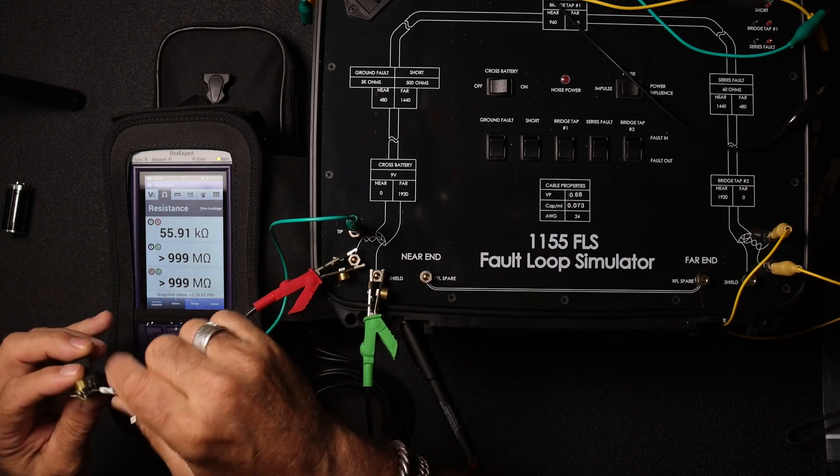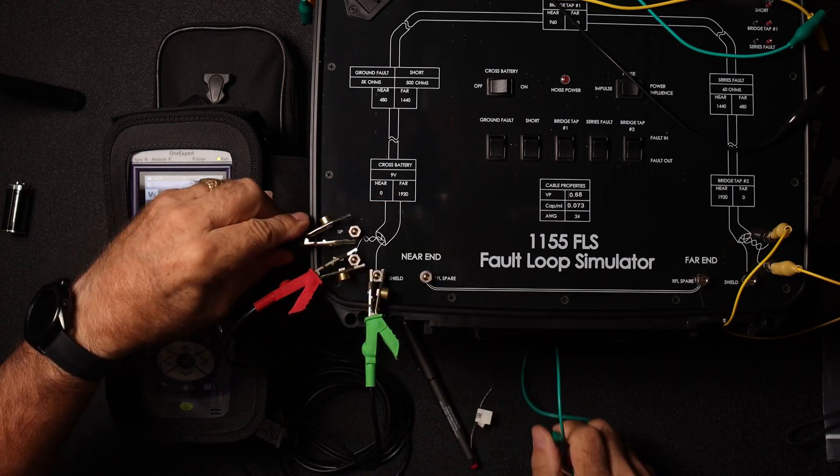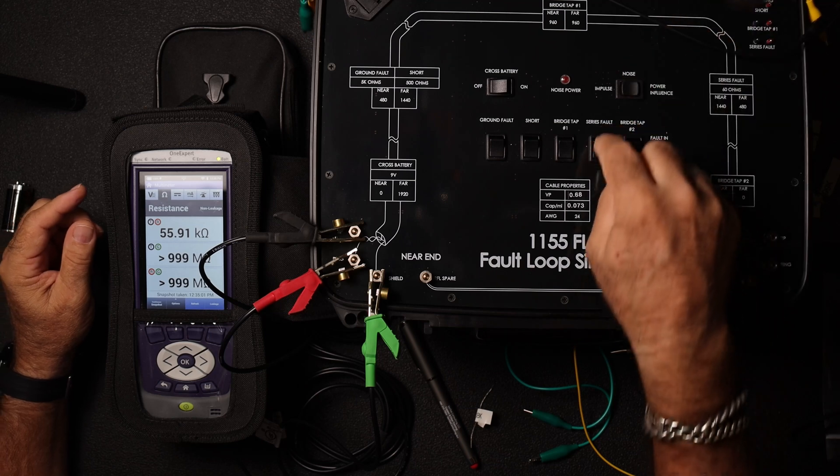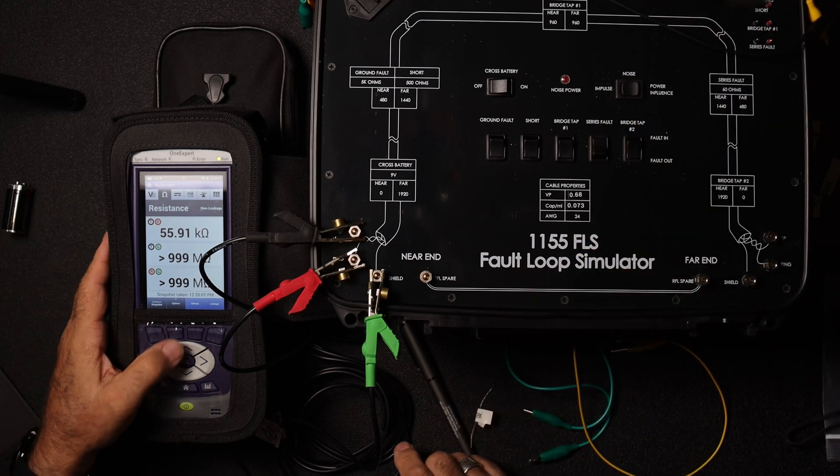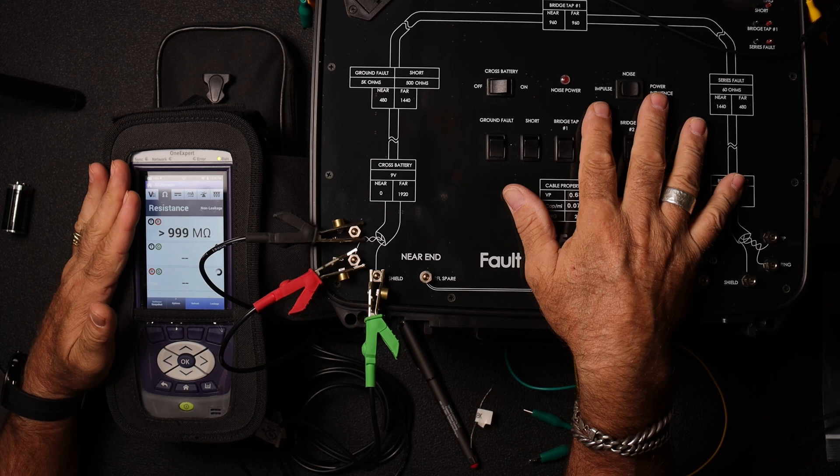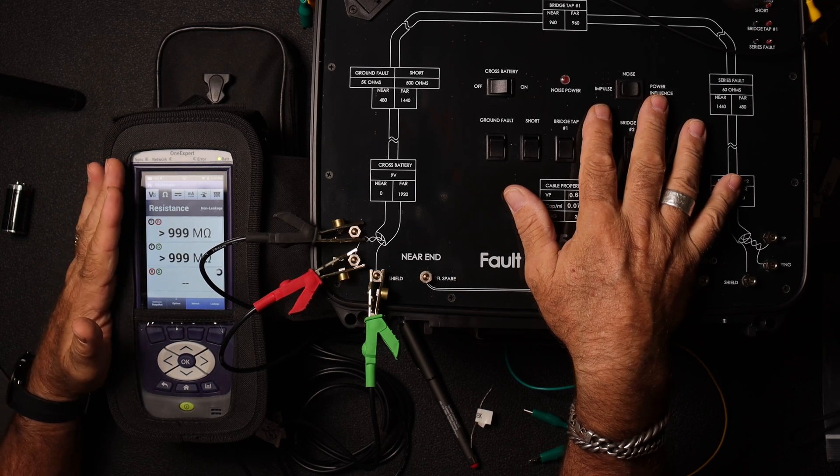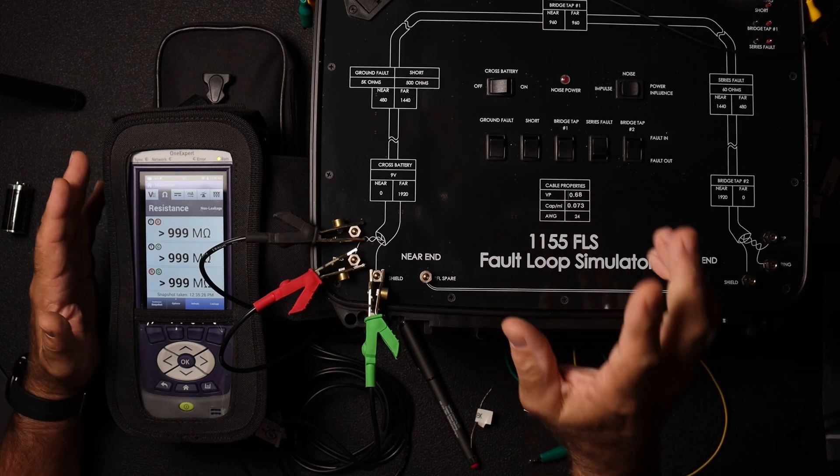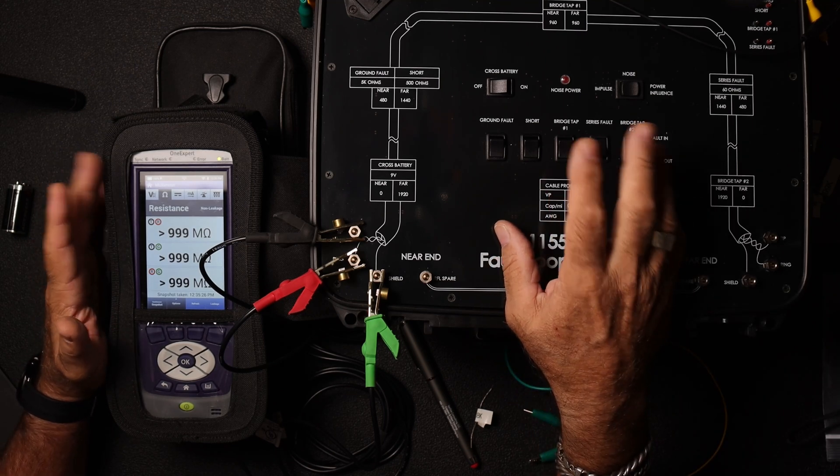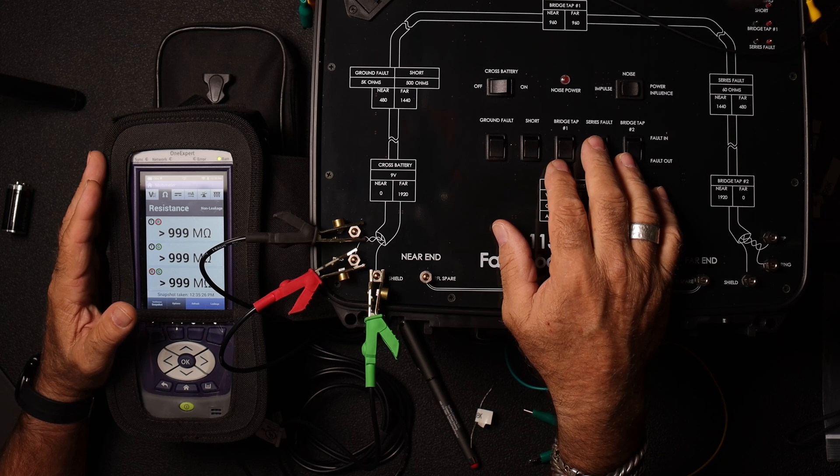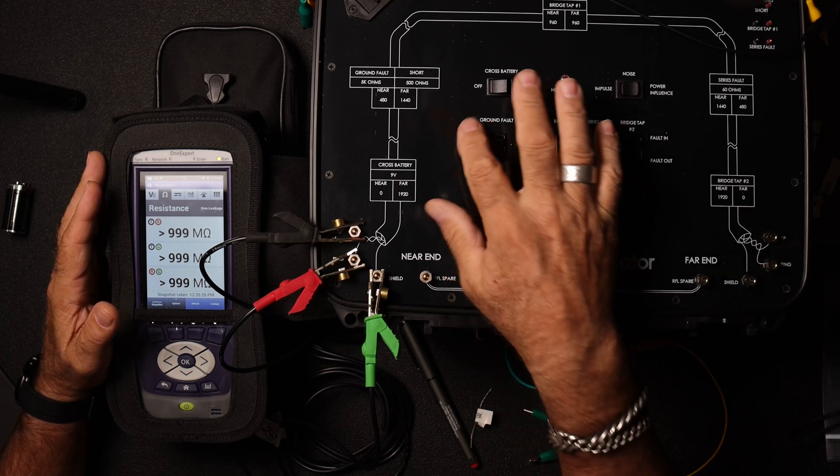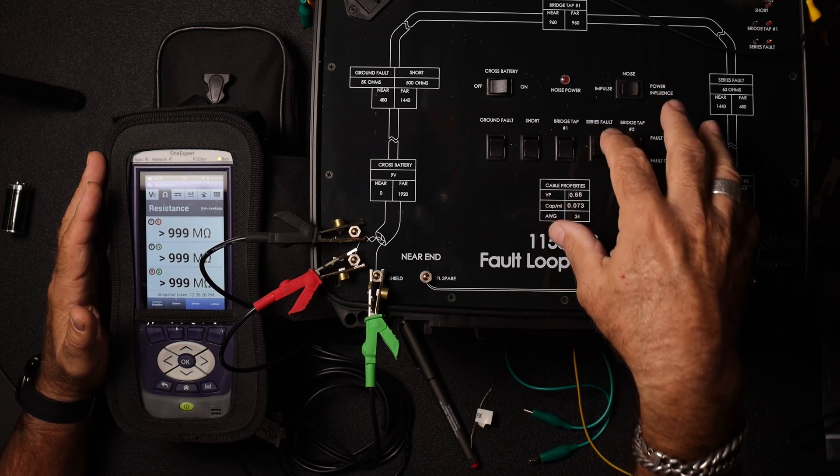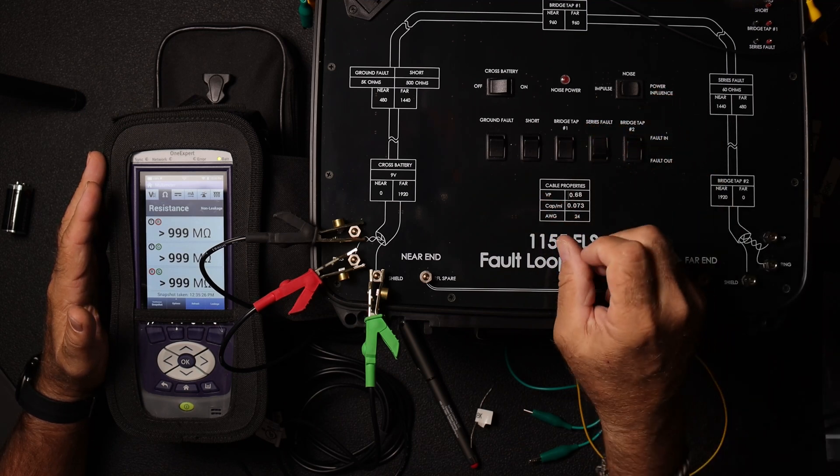So let's go ahead and take this out for now. We'll hook this back up. And what we're going to do is we're going to do this just like outside plant. So we've thrown our series fault in here. We do a 999, 999, 999. Perfect. We go throw our DSL on it and then all of a sudden we have all kinds of errors and faults and drops and retrains and nastiness. Customer's not happy. Why? Because we do have a series fault in here that's changed the impedance of the circuit. The DSL doesn't like that.